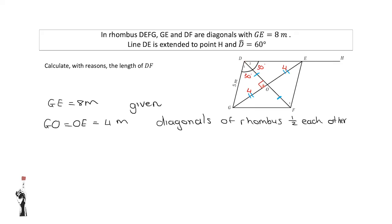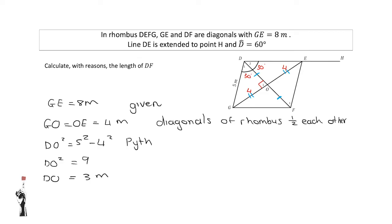I need the lengths of DO and OF to add them together to find DF. I can find DO since this is a right-angled triangle with two of the three sides known, so I can use Pythagoras. DO squared equals 5 squared minus 4 squared. Therefore DO squared equals 9, and DO equals 3 metres. Since DO equals 3 metres, OF is also equal to 3 metres. Reason: diagonals of a rhombus bisect each other.